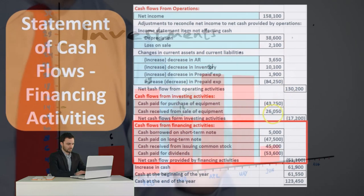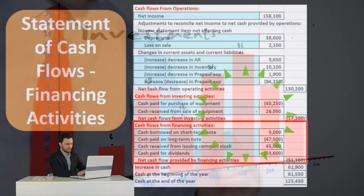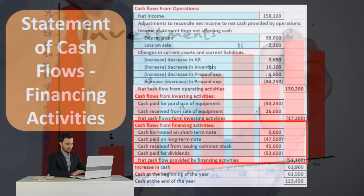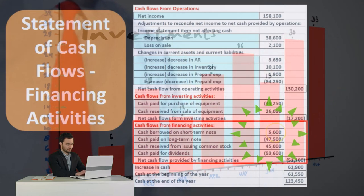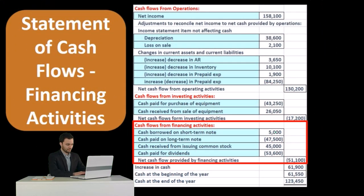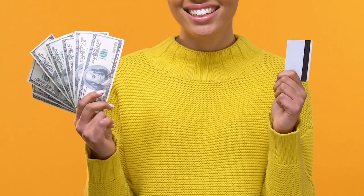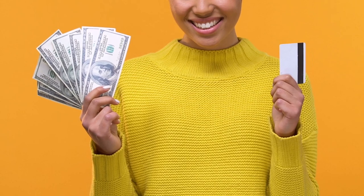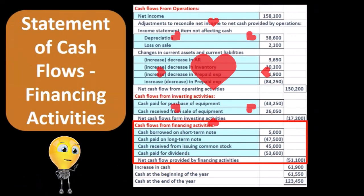We could have issued stock, so new owners investing directly into the company through the issuance of stock would be an activity recorded down here in the financing section. We could also be repaying the owners in the form of dividends, and that would be cash going out — another item recorded in the financing activities section of the statement of cash flows.